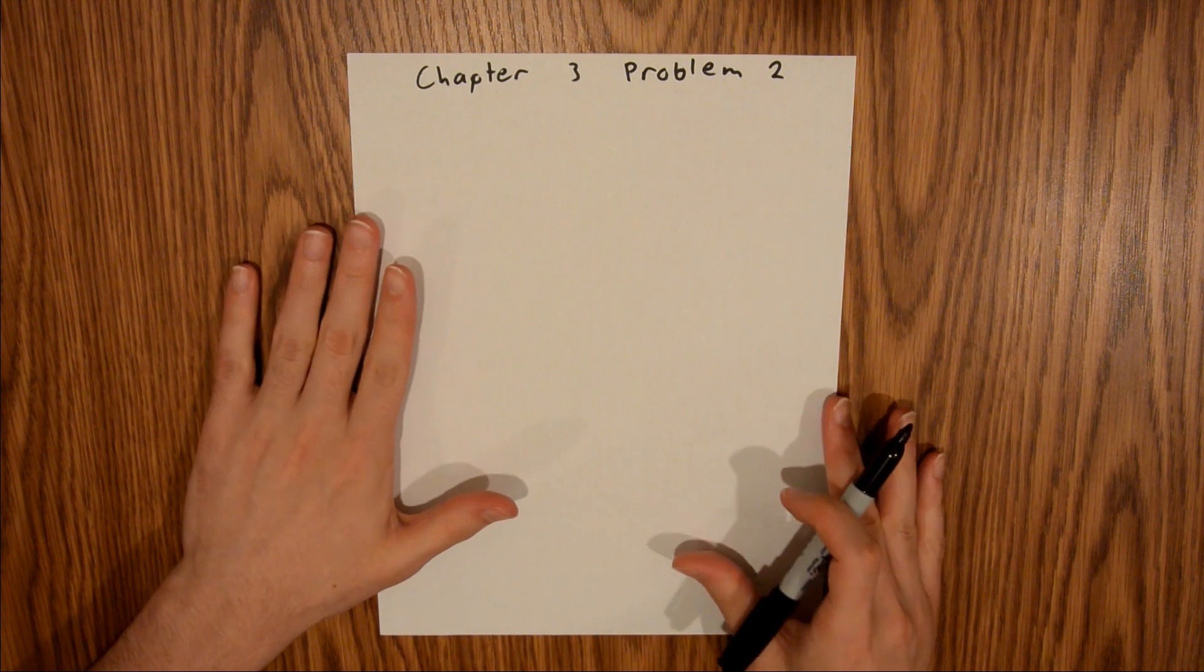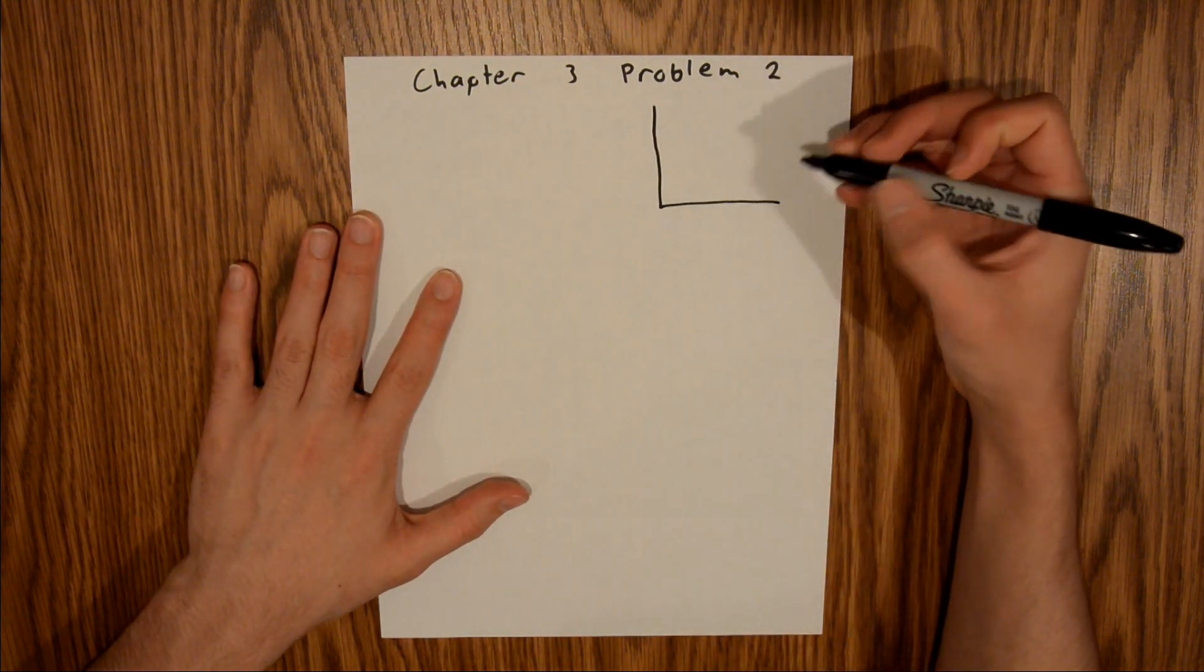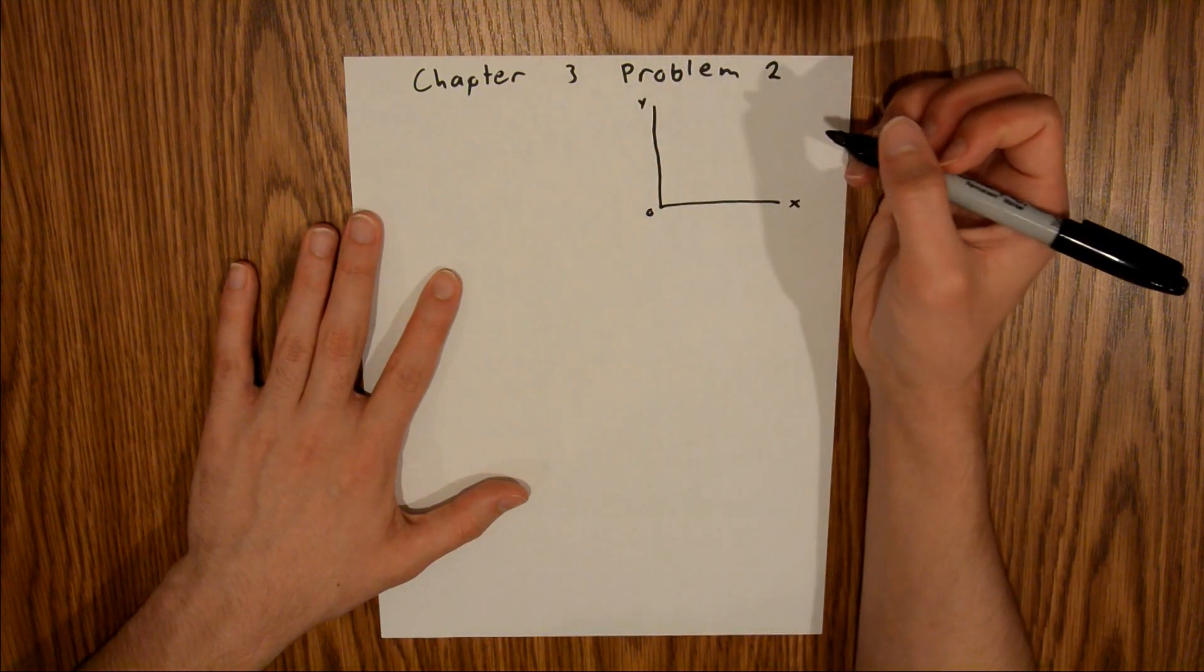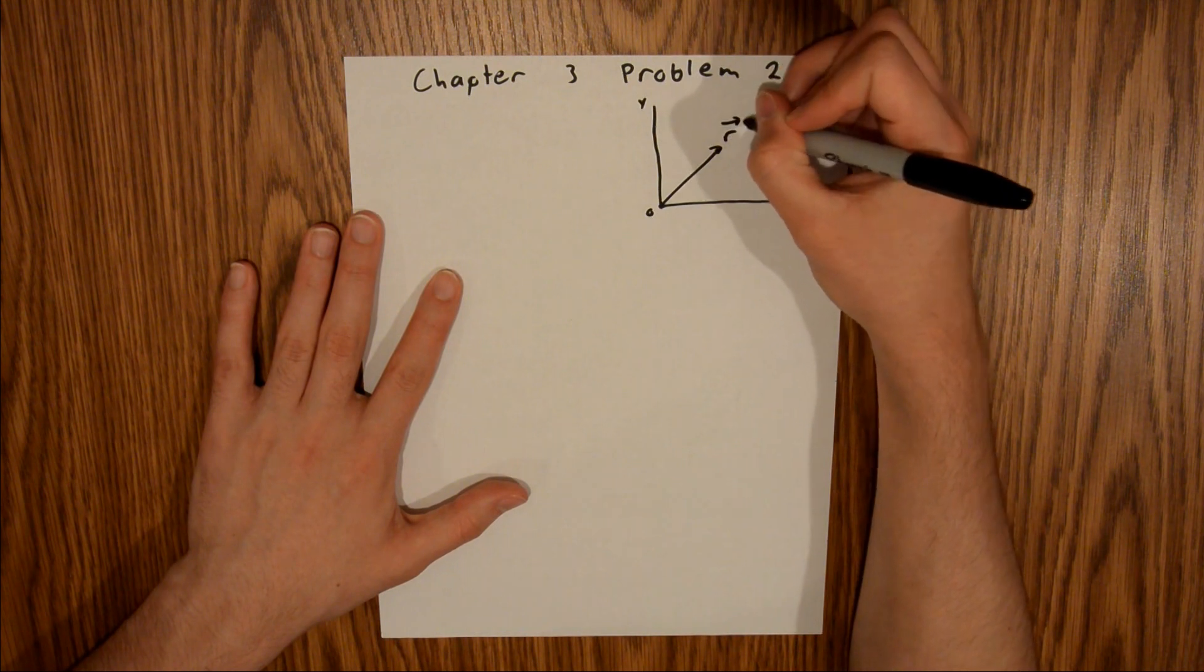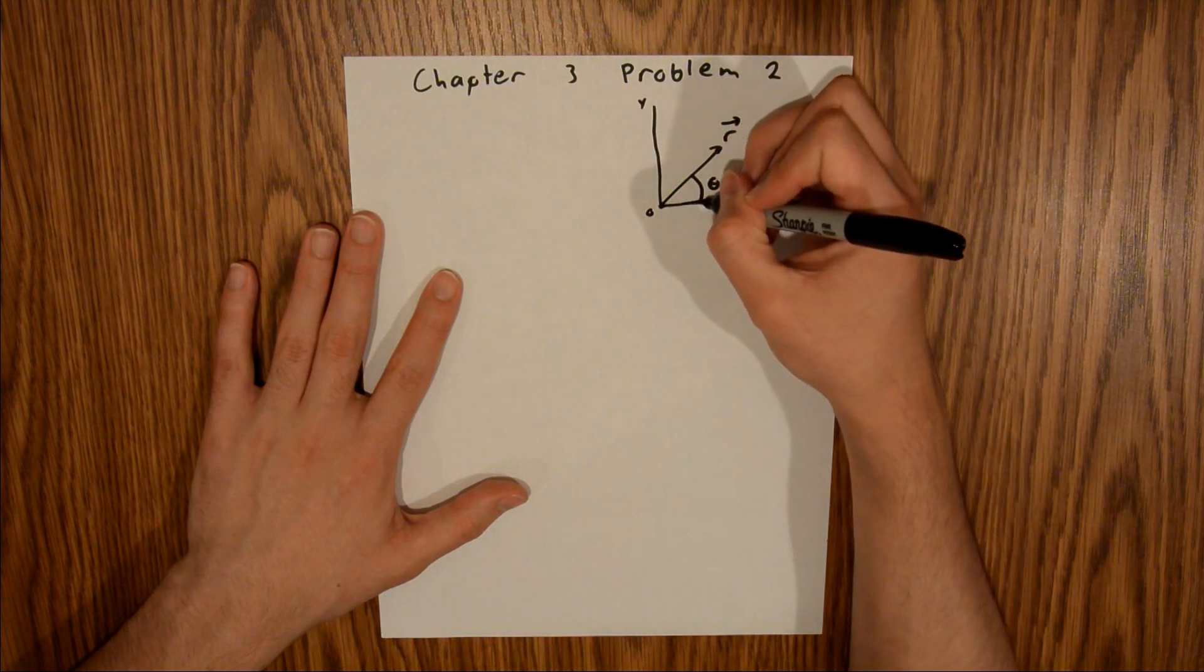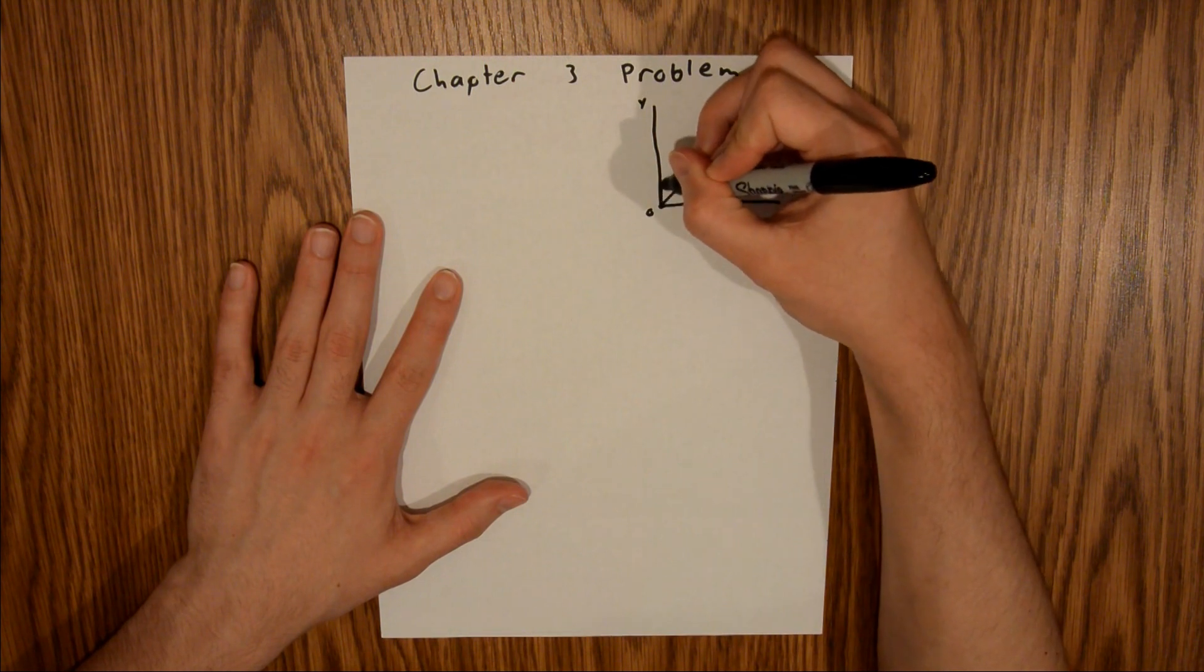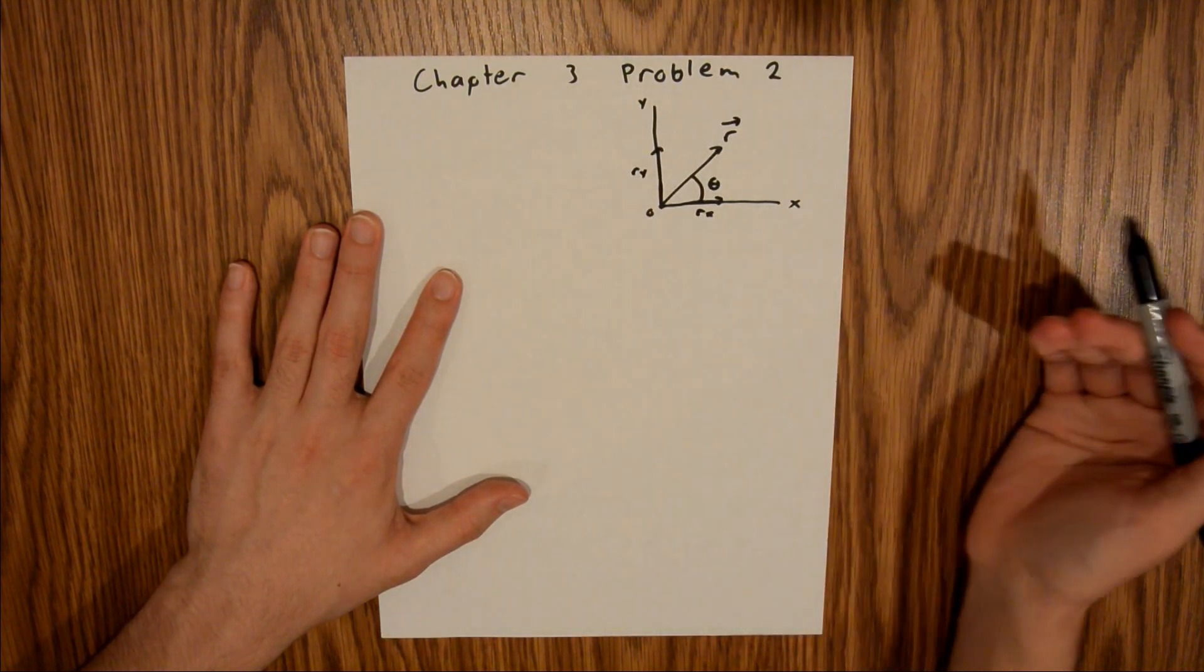And so the first thing that I want to do is just draw a quick little picture. So we'll say this is our x, y coordinate. This is our origin. And we have some vector, we'll call it r. The arrow over the r just means it's a vector. And here we have our angle. So this means that right there is rx, and this right here is ry. So our x and y components, respectively.